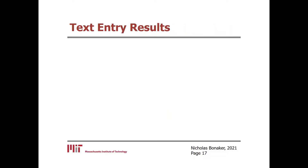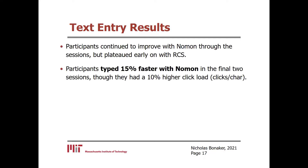We found that participants were continuing to improve with NOMON up to the final session, while they stopped improving with row-column scanning halfway through the study. We evaluated their performance in a text entry task in the final two sessions. Participants typed an average of 15% faster using NOMON. We found no difference in error rates between the interfaces, though participants had a higher click load — meaning they had to click more times per character using NOMON. This suggests a trade-off between a faster click speed and a higher click load.